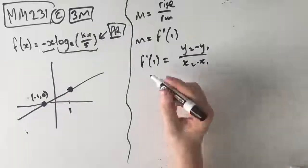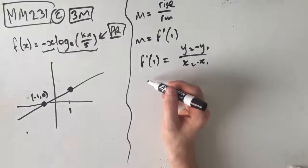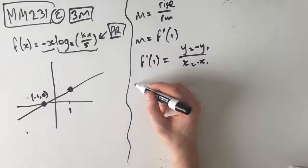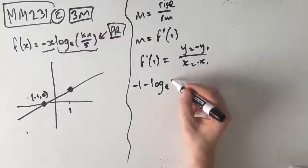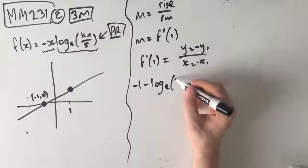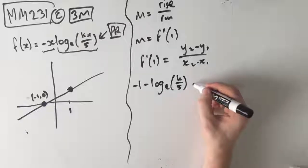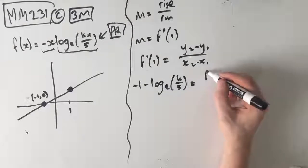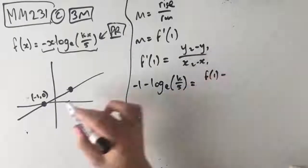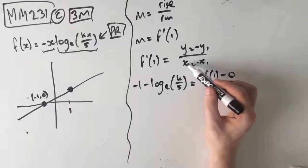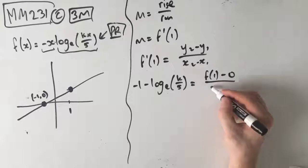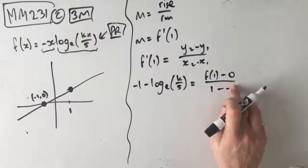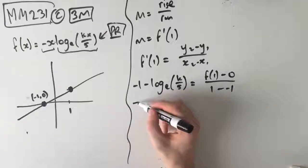From before, the gradient function is negative 1 minus log e of kx on 5. But here our x is 1, so we just get k times 1 over 5. That equals our y value f(1) minus our second y value, which is 0, over first x value 1 take away our second x value negative 1.